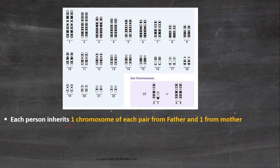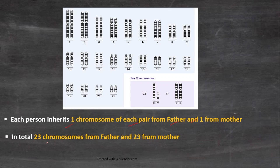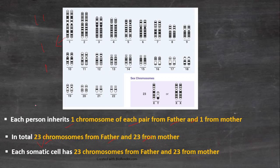Each person inherits one chromosome of each pair from their father and one chromosome from their mother. Therefore, 23 chromosomes are inherited from the father and 23 from the mother. From each pair, one chromosome comes from the father and one from the mother, so offspring have 23 chromosomes from the father and 23 from the mother.